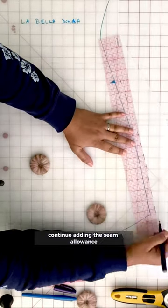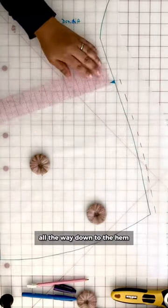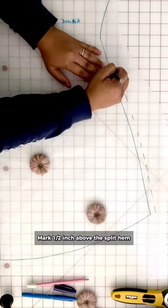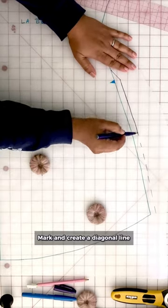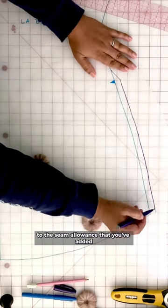Continue adding the seam allowance all the way down to the hem. Mark a half inch above the split hem mark and create a diagonal line to the seam allowance that you've added.